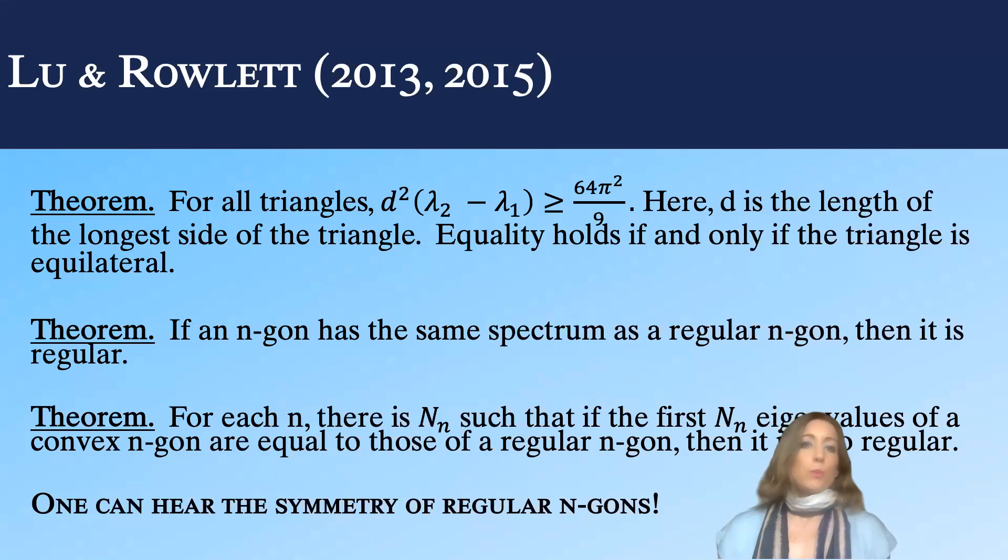The first one concerns the fundamental gap of triangles. And so this is the distance difference between the first two eigenvalues normalized by the diameter squared.